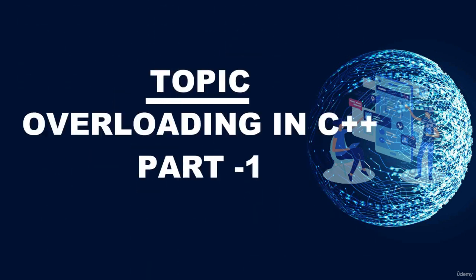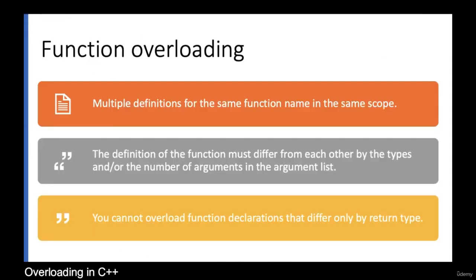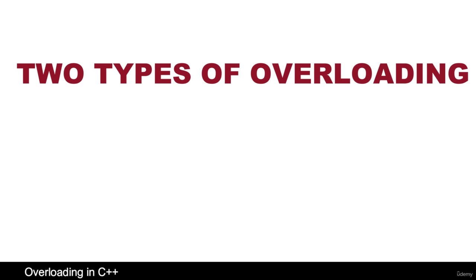We're looking at overloading in C++. C++ is very famous for its polymorphism, which is an important feature meaning processing the same thing in different ways. Overloading is a good example of polymorphism in C++. There are two types of overloading primarily: function overloading and operator overloading.